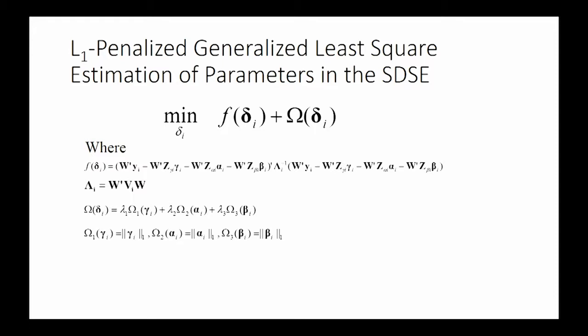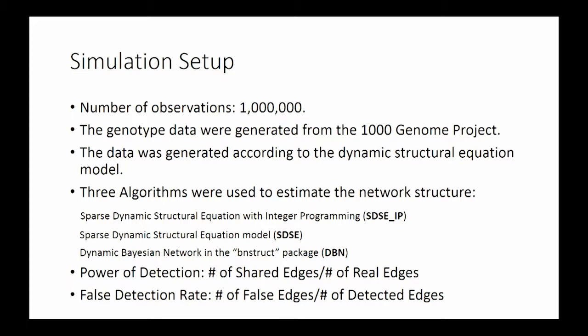After we get a model, we try to do some simulation to see the performance of our model. First we generate one thousand observations and also we generate some genotyping data by using the 1000 Genome Project.